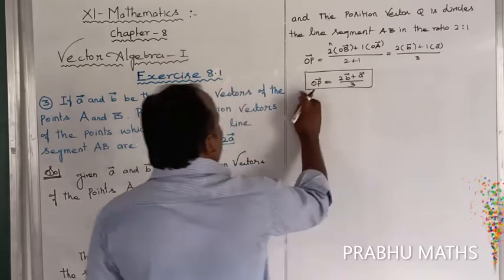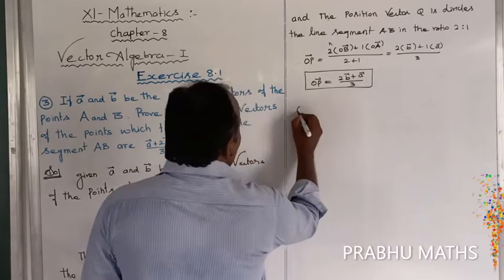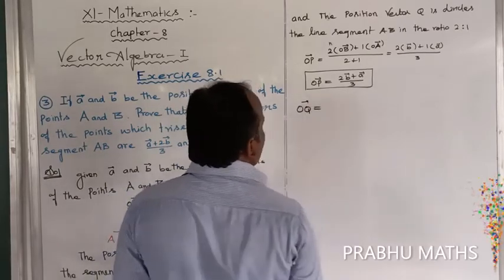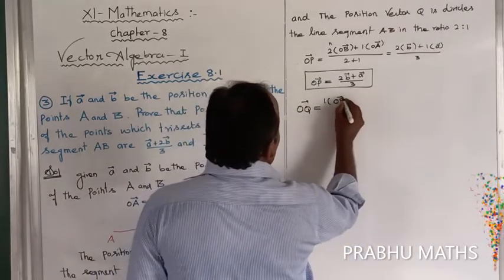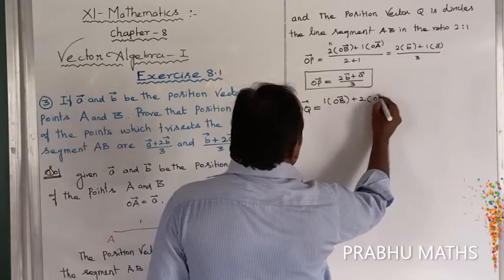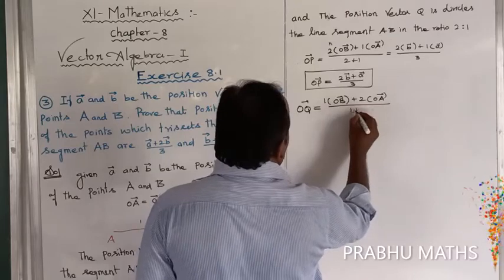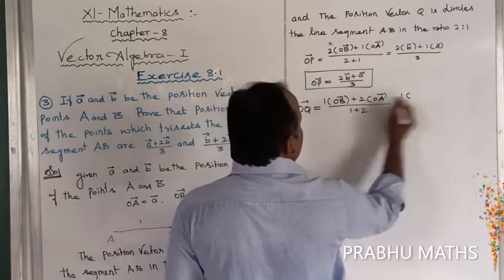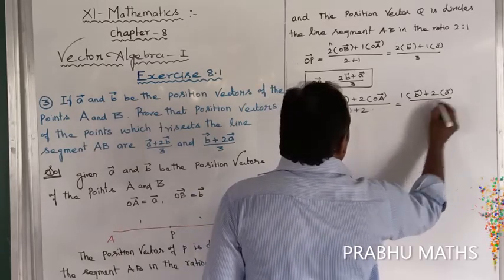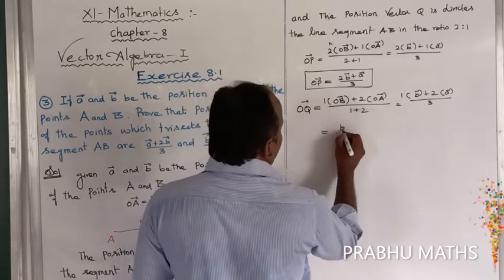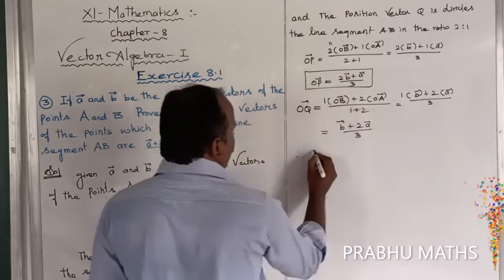The first one is completed. Now for the second term — OQ vector equals 1 times OB vector plus 2 times OA vector, whole divided by 1 plus 2, which equals b vector plus 2a vector divided by 3.